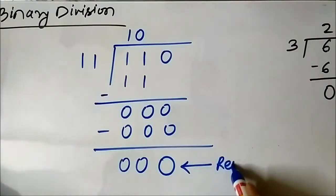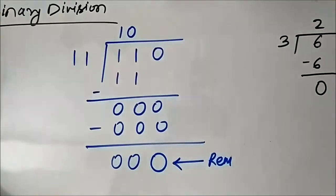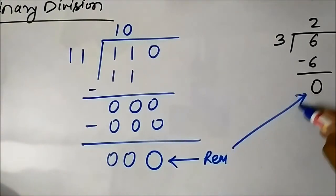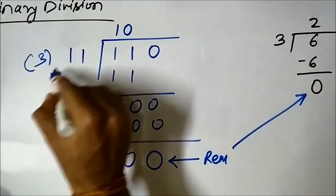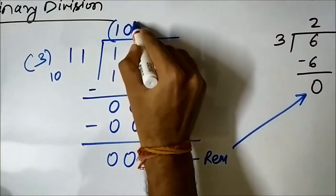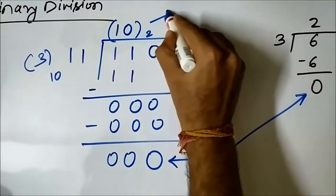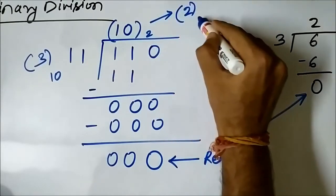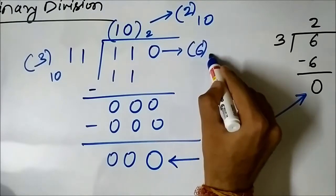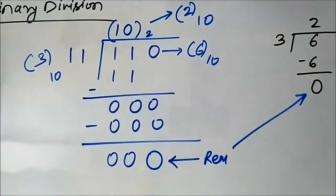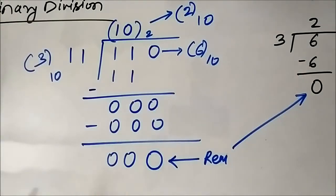So we bring down the 0 and put 0 in the quotient. The final remainder is 0 0. So the quotient is 1 0 (which is 2 in decimal) and the remainder is 0, the same result we got in decimal form.